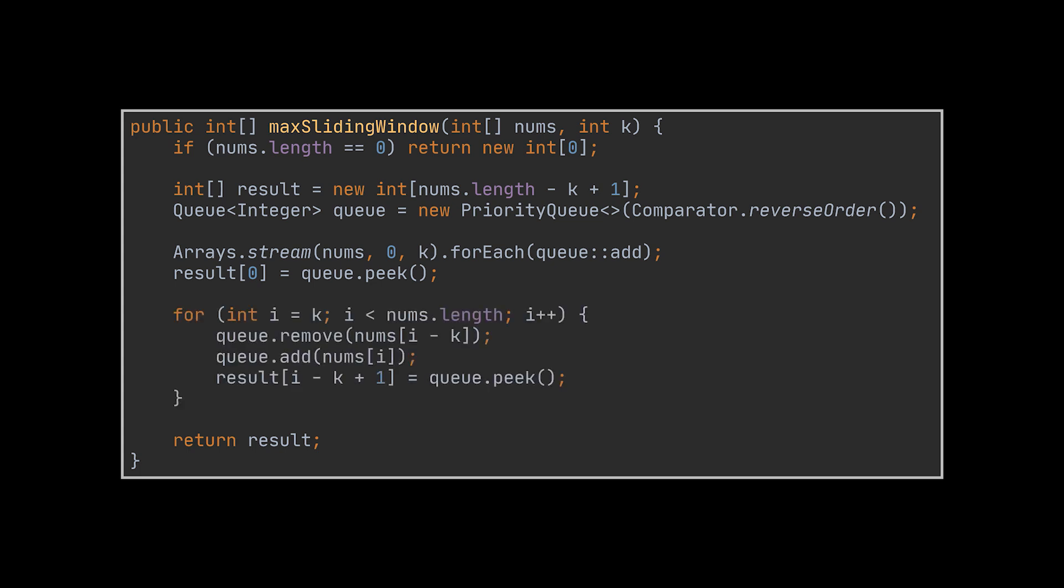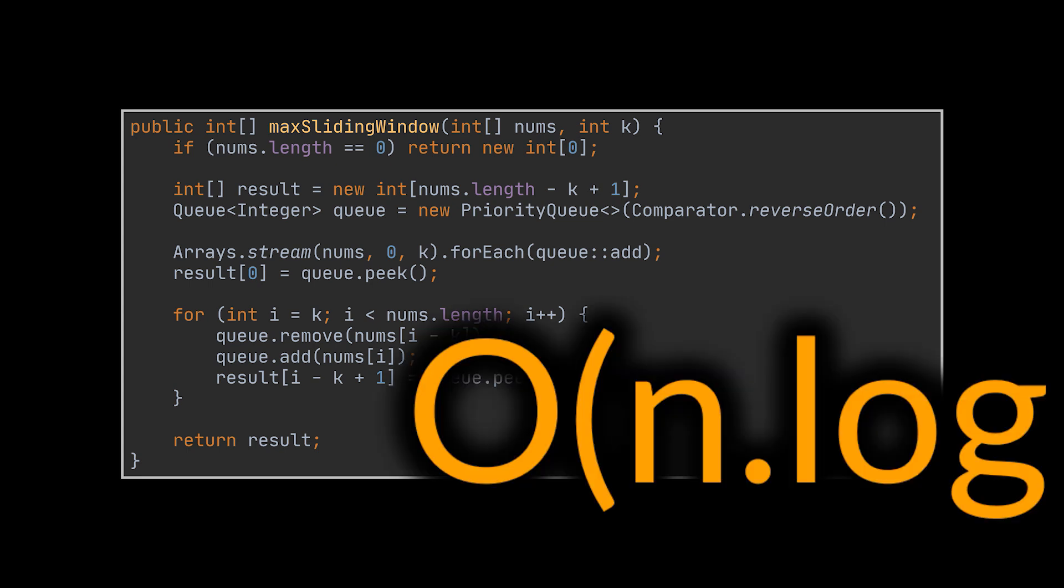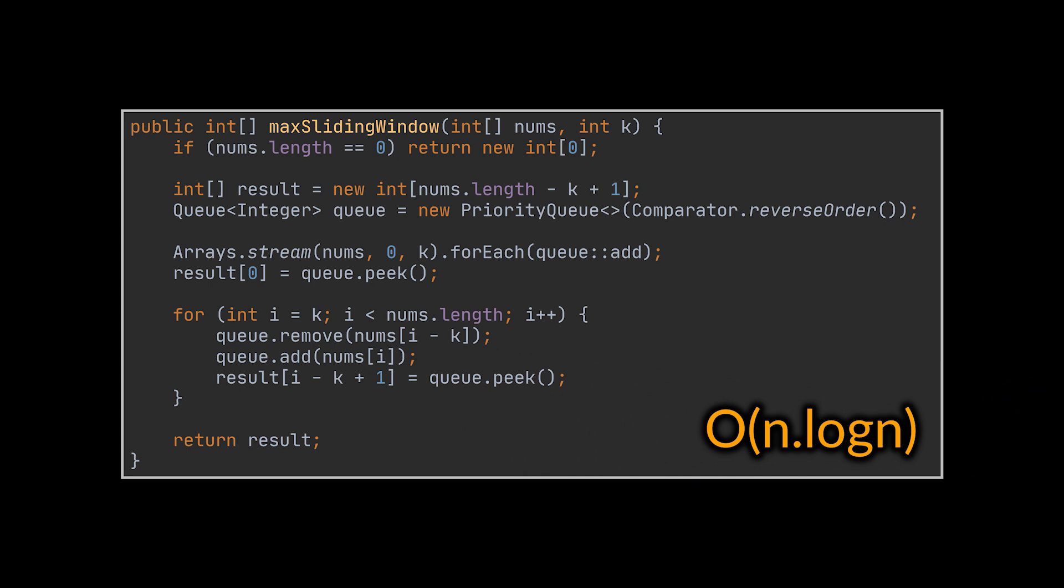then all we have to do while iterating over the remaining elements is remove the leftmost integer from the heap, add the current integer, and set the result of the window to be the maximum retrieved in constant time. This solution has a theoretical n log n complexity, but practically, it may take a bit more time. That's why our previous implementation is considered the optimal one.